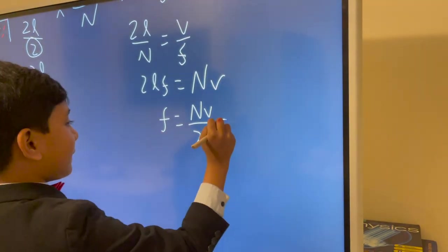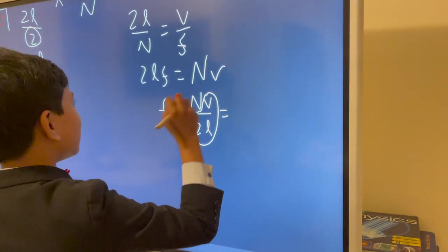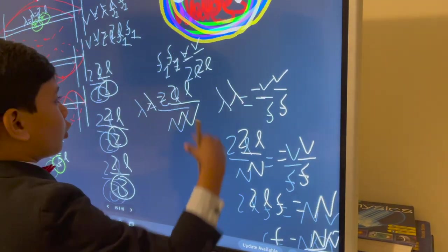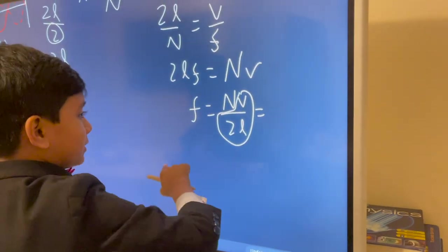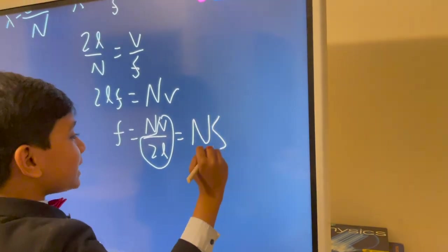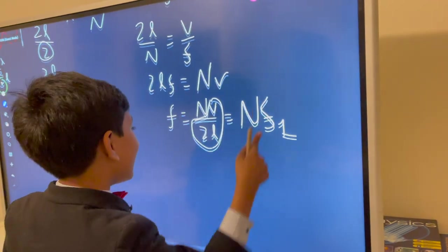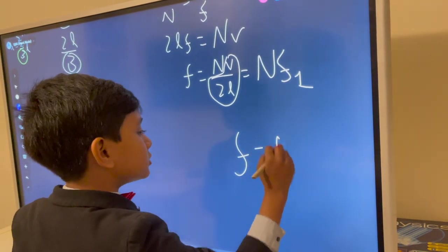Hmm. v over 2L. Where have I seen that before? Hmm. Let's just plug that in. And that leaves us with f equals n f1.